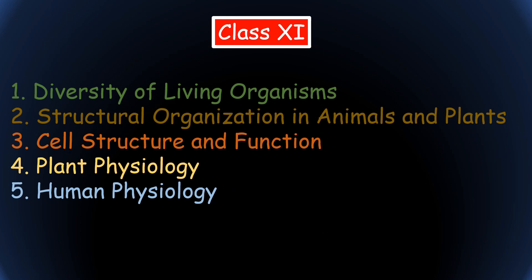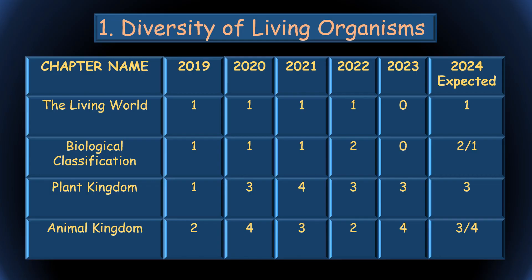Now I will show you the unit-wise weightage based on the last five years' question papers. Class 11 has five units: Diversity of Living Organisms, Structural Organization in Animals and Plants, Cell Structure and Function, Plant Physiology, and Human Physiology. The first unit — Diversity of Living Organisms — contains four chapters: The Living World, Biological Classification, Plant Kingdom, and Animal Kingdom.